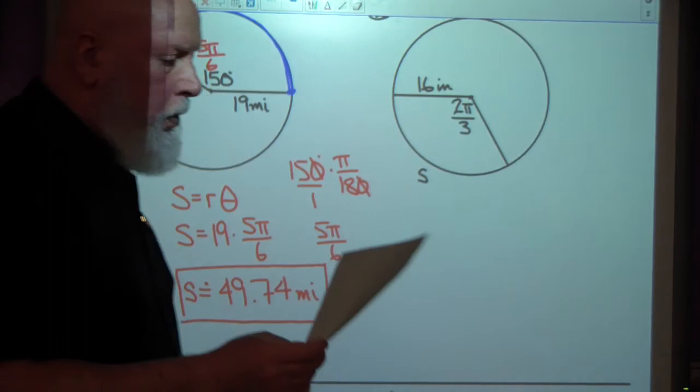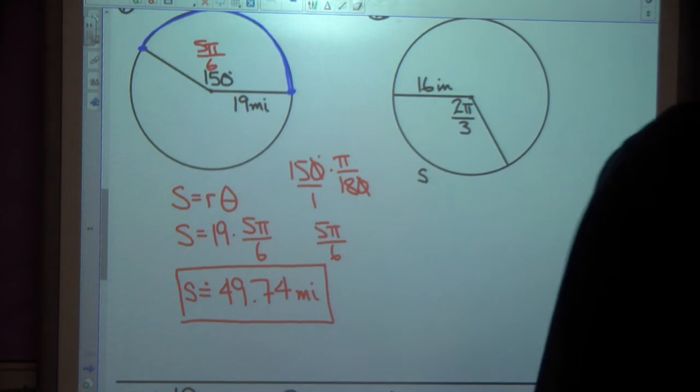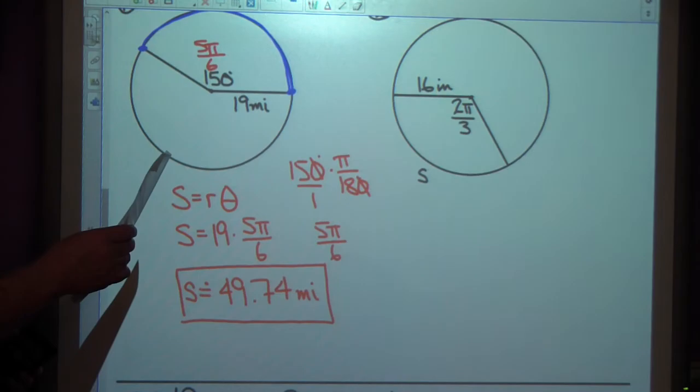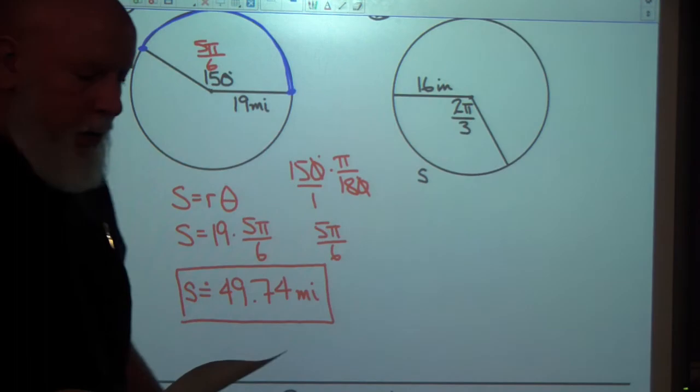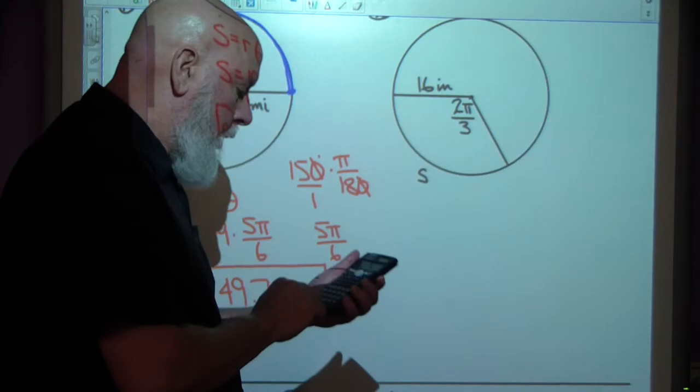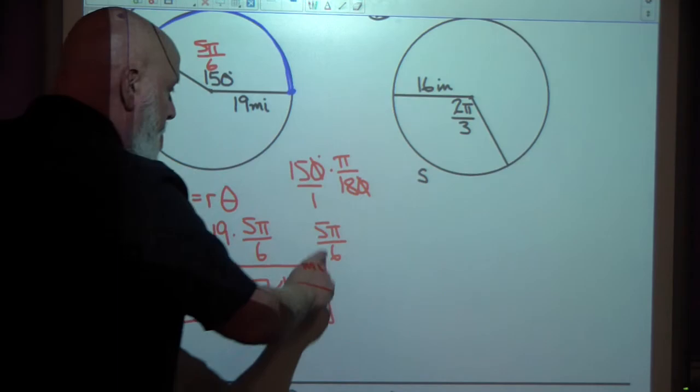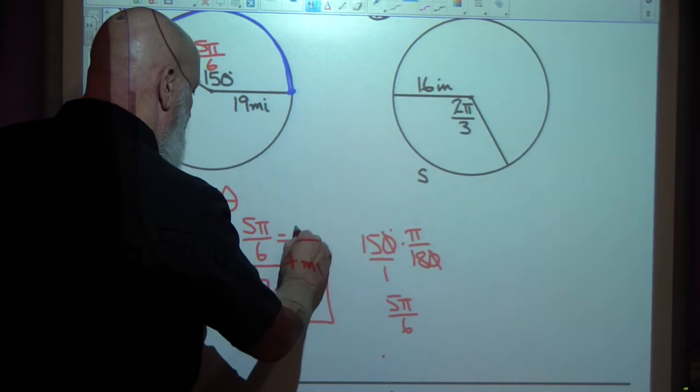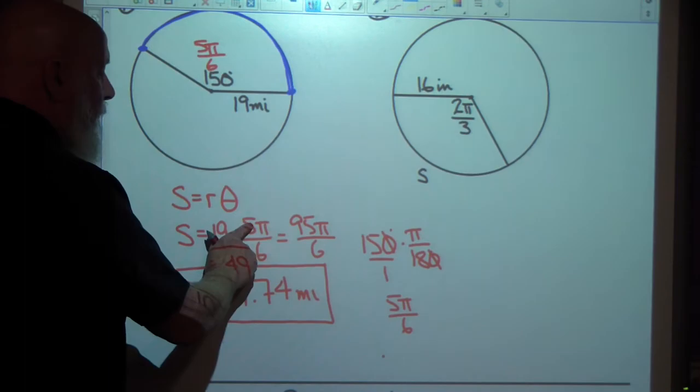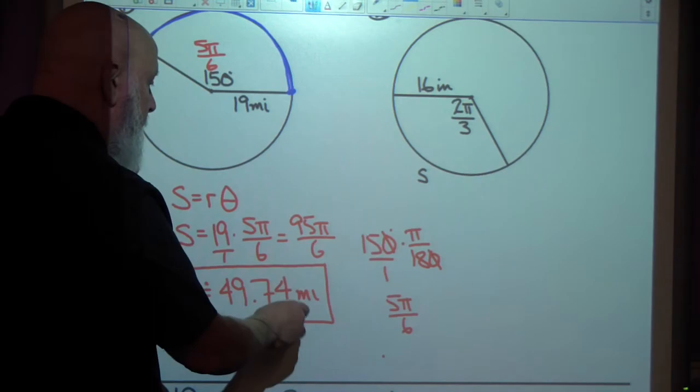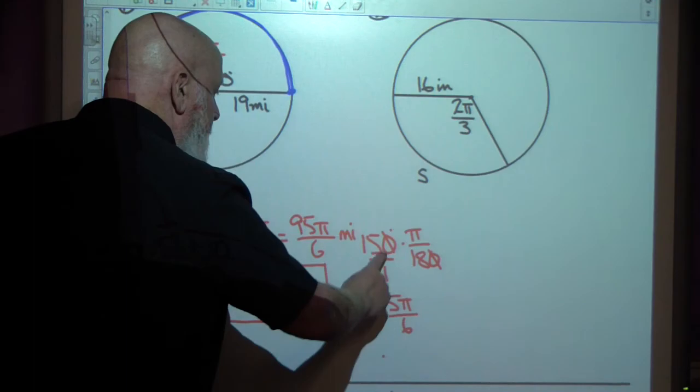And now I'll check my answer and see if I got it right. It says 95 pi over 6. Actually, this right here, 19 times 5 is 95. That is 95 pi over 6. And if we were to round it, 19 times 5 is 95 pi, 1 times 6 is 6. And that would be miles.